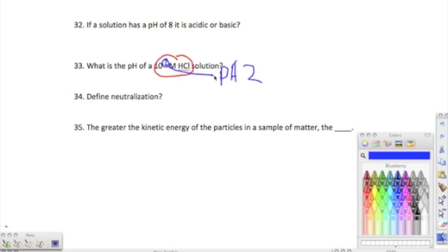Number 34, it says define neutralization. Neutralization is an acid plus base equals water plus salt. It's the reaction between an acid and base during a titration. We get that neutralization reaction, where we have acid plus base equals water plus salt.